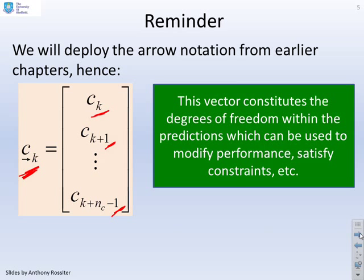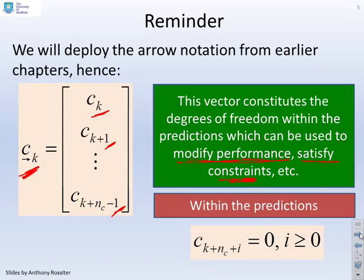Now this vector constitutes the degrees of freedom within our predictions, and these are the things we can use to modify performance, should that be something we need to do, or to satisfy constraints and possibly to do other things where that is required. Now we're also reminding you that within the predictions, we're assuming that these perturbation terms become zero once you get beyond NC steps.